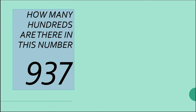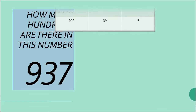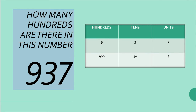Let us see another example: 937. First, let us see the number in the place value table. How many hundreds, how many tens, and how many units are there? From this table, we can see that the hundreds place is 9, the tens place is 3, and the units place is 7.